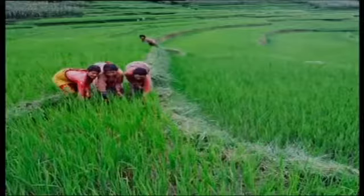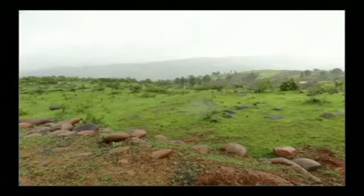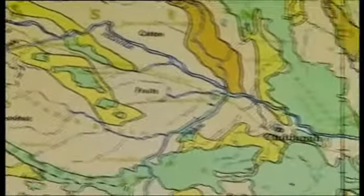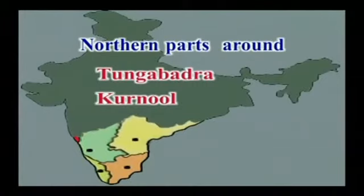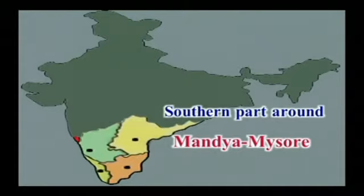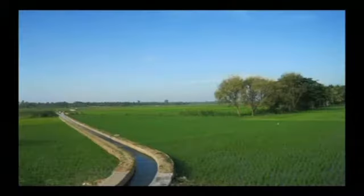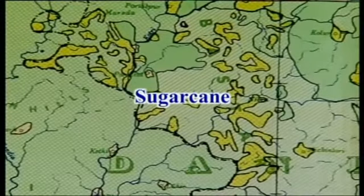Looking at the prevailing land use patterns, we can see the distribution of agricultural lands, forests, non-agricultural lands, grazing lands, and unproductive lands. Agricultural lands include irrigated croplands, unirrigated croplands, and plantation areas. The irrigated croplands are distributed in the northern parts around the Tungabhadra floodplain and Kurnool region, in the eastern parts around the Vellore-Kanchipuram region, and in the southern part around the Mandya-Mysore region. The major crops grown in the irrigated zones are rice, groundnut, and sugarcane.